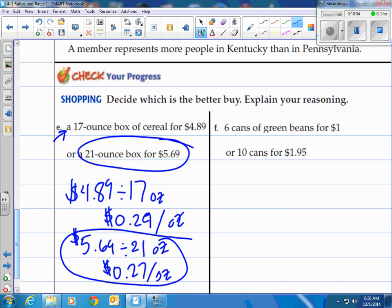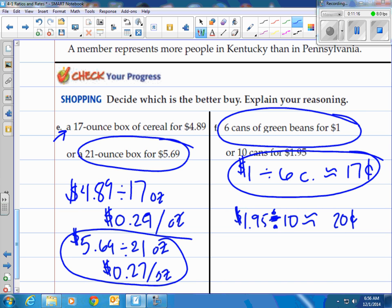Alright how about this one? 6 cans of green beans for a dollar or 10 cans for a buck 95. Which one's a better deal? Well let's take our dollar divided by 6 cans. When we do that we end up with roughly 17 cents. When we take the dollar 95 and divide by 10 cans, you roughly get 19.5 cents. I'll round it to 20 cents. I rounded the 17 cents as well. If you notice, that first deal is better. You can buy 6 cans of green beans for a buck and that would save you roughly 3 cents per can.